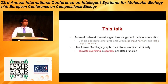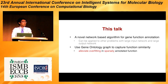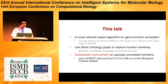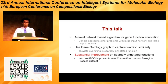Many functions only have very few annotations. For those sparsely annotated functions, we will not have enough training samples, so a simple classifier will very easily be overfit. In this work, we propose to use the gene ontology graph to capture the similarity between functions, so we can use the samples of similar functions to help alleviate the overfitting in those sparsely annotated functions. As a result, we observe a substantial improvement on the sparsely annotated functions.